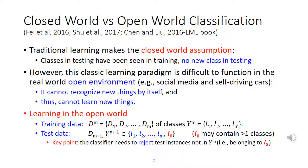Learning in the open world breaks the closed-world assumption — it assumes that the classes in testing may not have been seen in training. Formally, in the training data there are datasets from M known classes L1 to Lm. During testing, the data come from those M known classes and also from class L0, which indicates data not from the M known classes or not appearing in training. Class L0 may contain more than one class. Thus, besides classification, an open-world classifier also needs to reject test instances not in classes L1 to Lm.